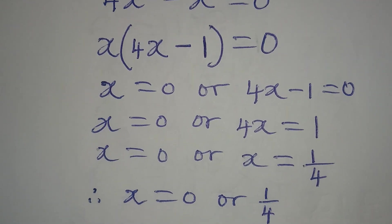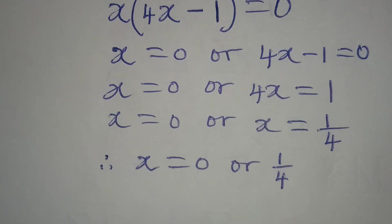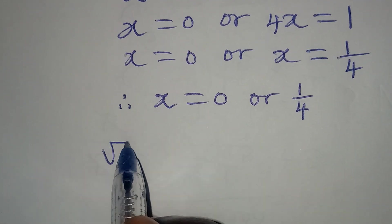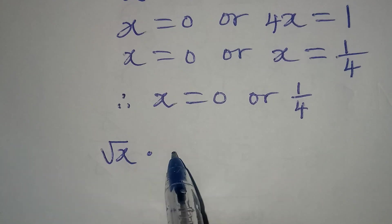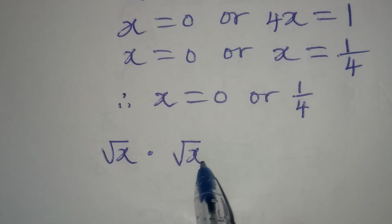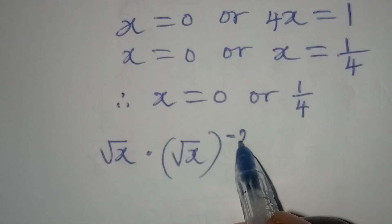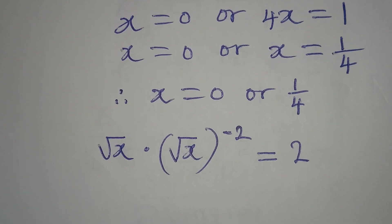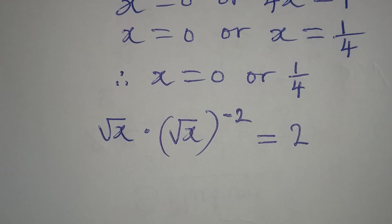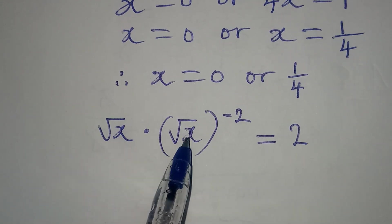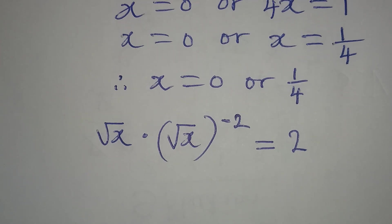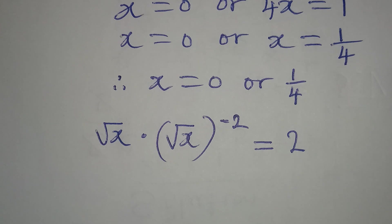But let's check to know if we are right or wrong. The original equation is square root of x multiplied by square root of x to the power of negative 2, equal to 2. If we put 0 in, automatically everything — it won't work. 0 will not satisfy this equation.